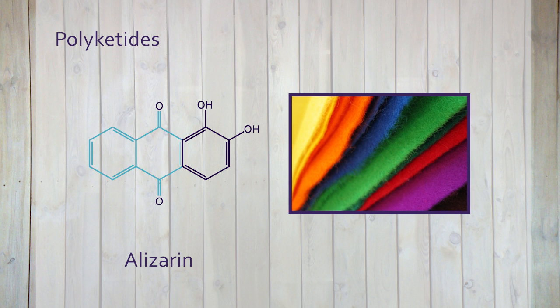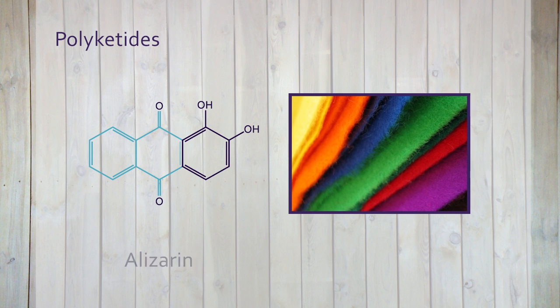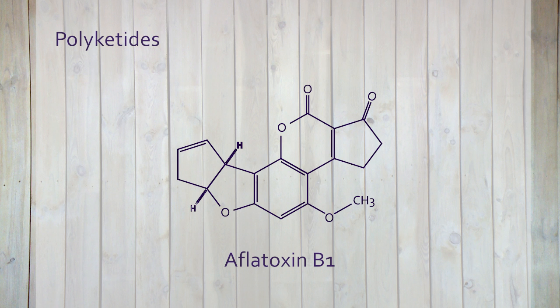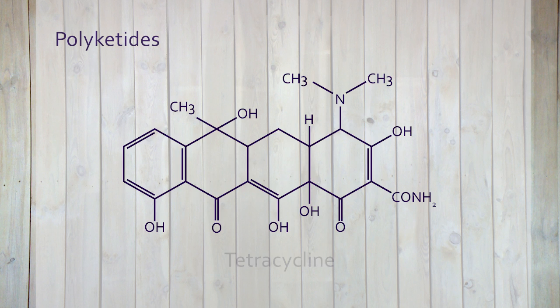Some very potent fungal toxins belonging to the group of aflatoxins, such as aflatoxin B1, are also polyketides. Many antibiotics also have polyketide structures, such as the tetracyclines.